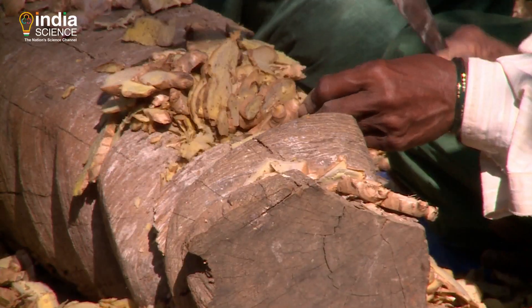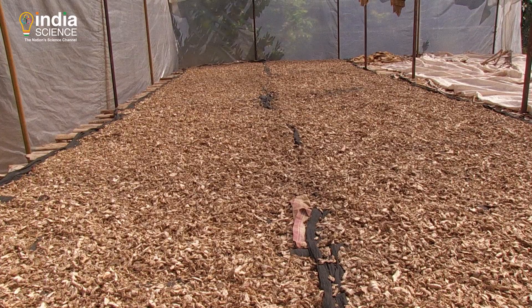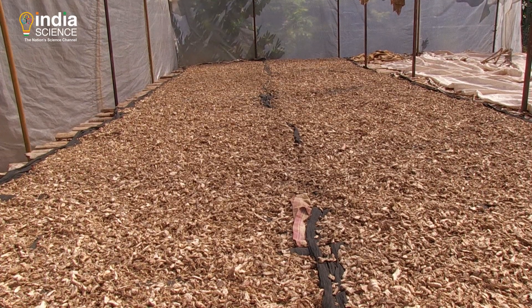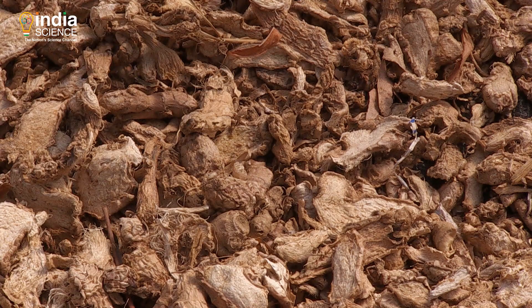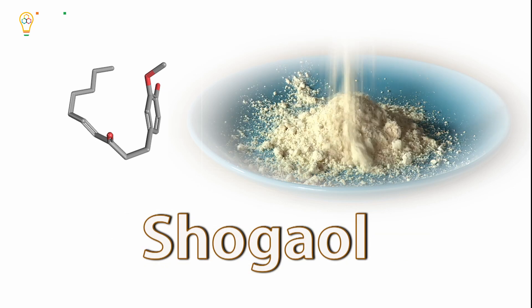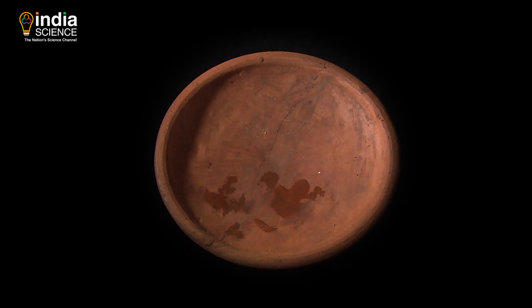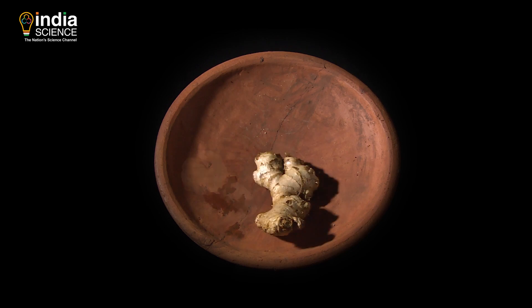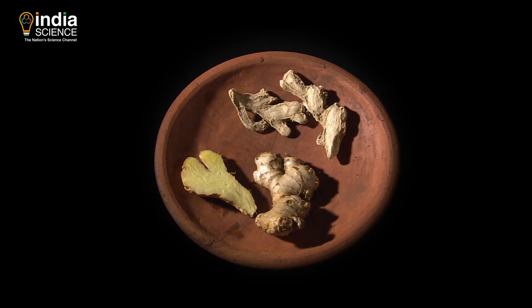Ginger is also used in its dried form as soot (dry ginger). The dehydration transforms gingerol into shogaol, a molecule twice as pungent. The chemistry may be unknown to us, but the difference in the properties of the three forms is known to most.